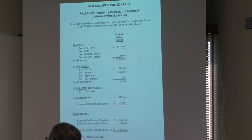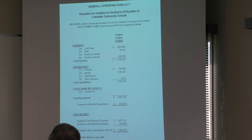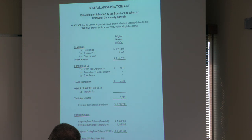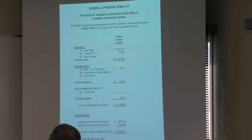The debt service fund is again just taxable values, QZAB money coming in, and debt service payments going out. We're projecting year-end at $5,285,853, which will be fine for continuing to pay down the debt. For the sinking fund, also largely based on taxable values, we're looking at a fund balance of about $2,599,161. We don't have any current projects planned, but as the year goes on we will devise plans and use these funds to cover them.